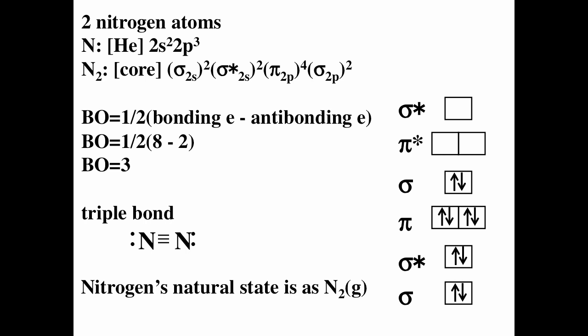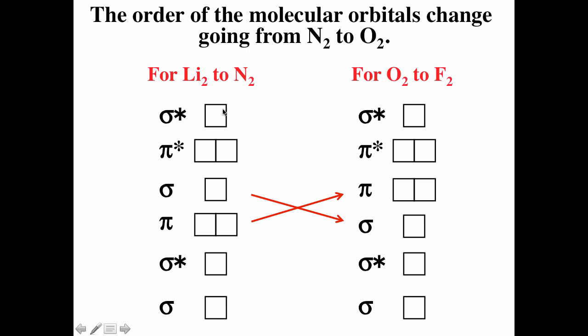Similar to how the 4s and 3d orbitals are close in energy and there is a fluctuation in ordering, there is also a fluctuation between the pi and sigma orbital energies. From lithium to nitrogen the order is sigma, sigma star, pi, sigma, pi star, sigma star. But for oxygen and fluorine, the pi and sigma ordering flips, giving sigma, sigma star, sigma, pi, pi star, sigma star. Use the first ordering for lithium through nitrogen, and the second for oxygen and fluorine.